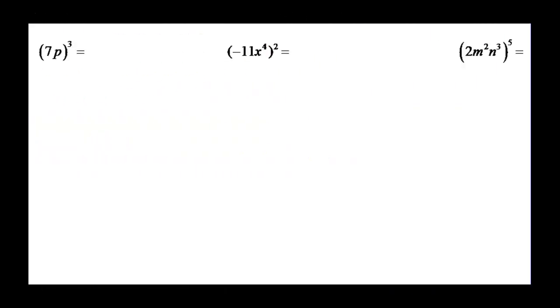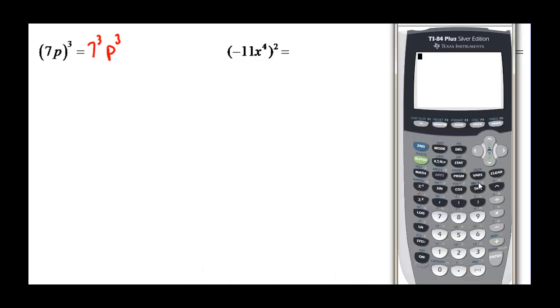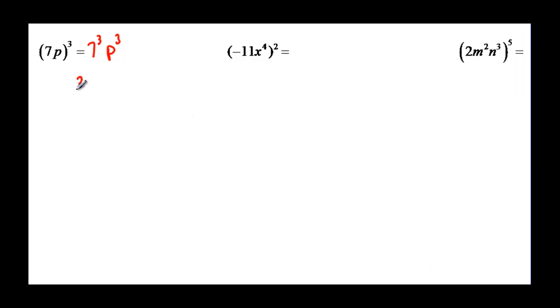If I look at these closely then I am going to practice everything that I just looked at. So I have a product that is being raised to a power, so that means 7 to the 3 times p to the 3. And if we had a calculator we would figure out what 7 to the 3 was. I have 7 to the 3, so that is actually 343 p cubed.